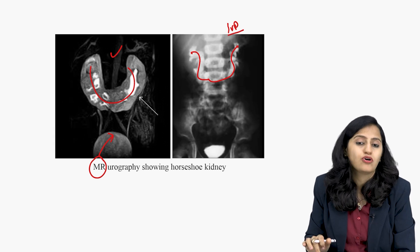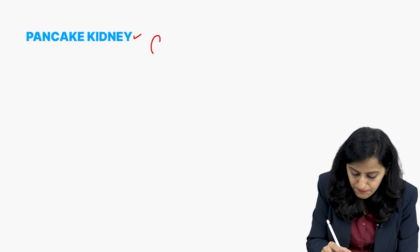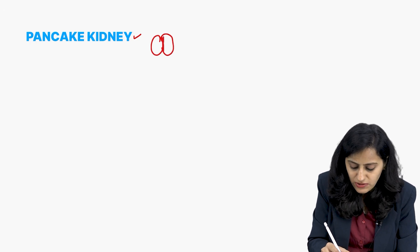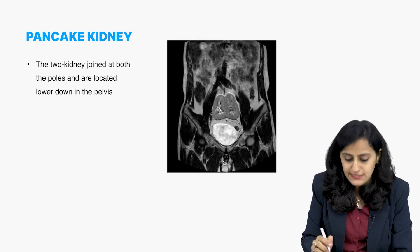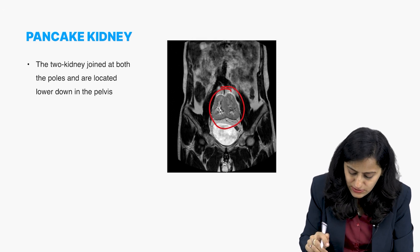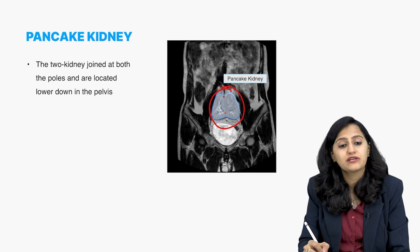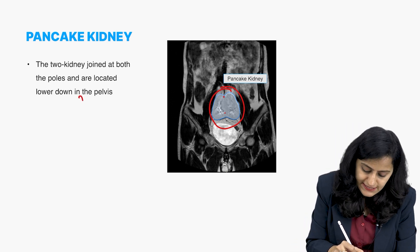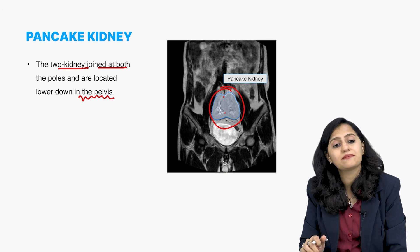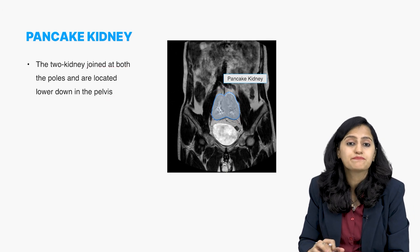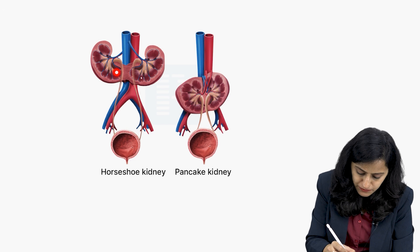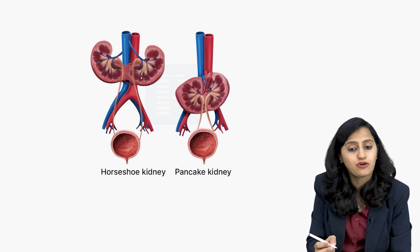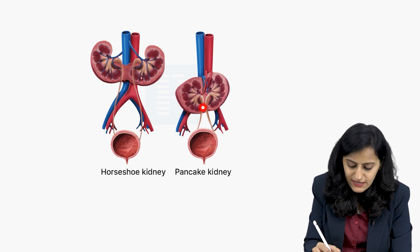Here again on IVP is the horseshoe kidney. Now going to pancake kidney — how is pancake kidney different from horseshoe? In pancake kidney, both poles, the entire kidneys, are fused together throughout — it's not just one pole fused. The pancake kidney is located in the pelvis, a low-lying kidney. The two kidneys are joined at both poles. In horseshoe, they are fused at one pole; in pancake, they are fused at both poles.